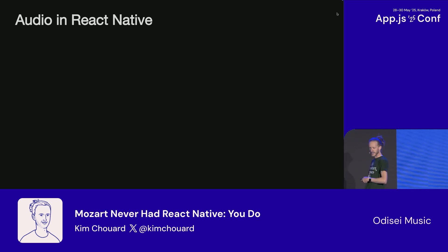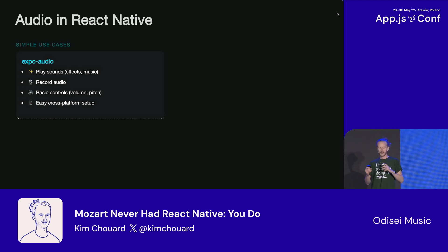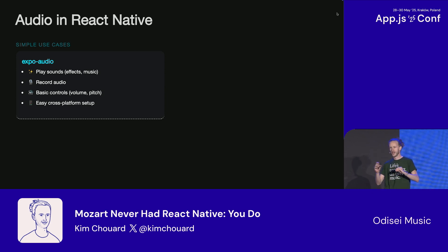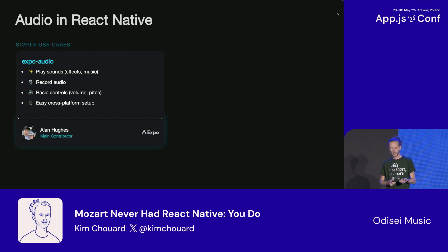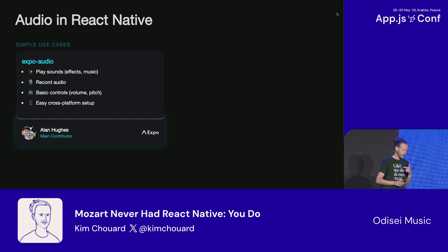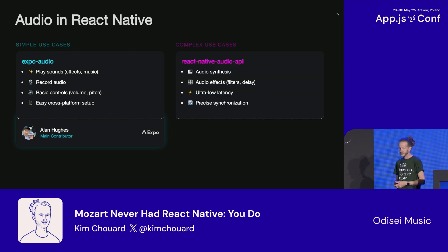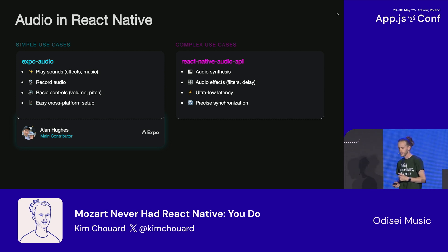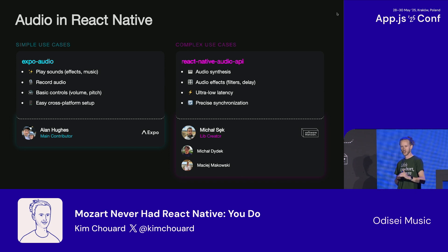Let's take a step back and think about what we covered. For audio in React Native — if you have a simple use case, just want to play sound or record audio with basic control and cross-platform support, Expo Audio is great. Thank you to Alan Hook for creating and updating this. If you want to go deeper with very high performance needs, you can use React Native Audio API — it enables audio synthesis effects, very low latency. Thank you to Michal Alsek and the team at Software Mansion for creating and maintaining this.